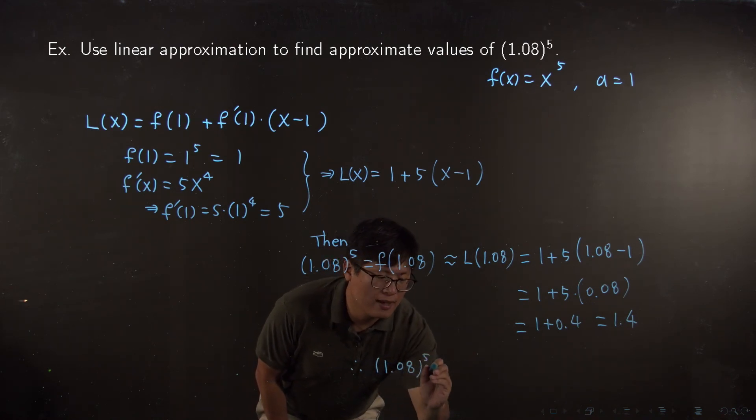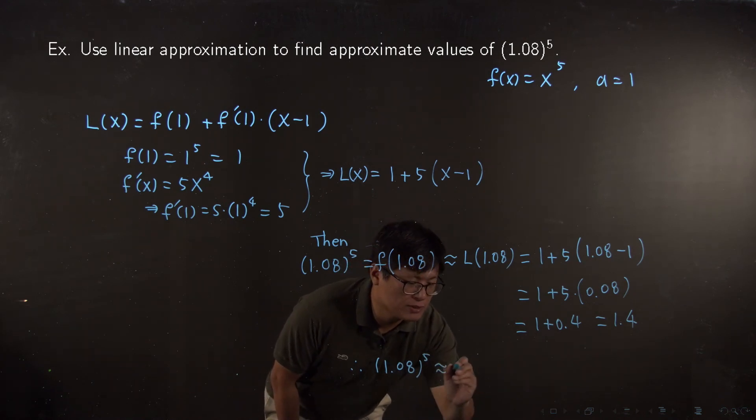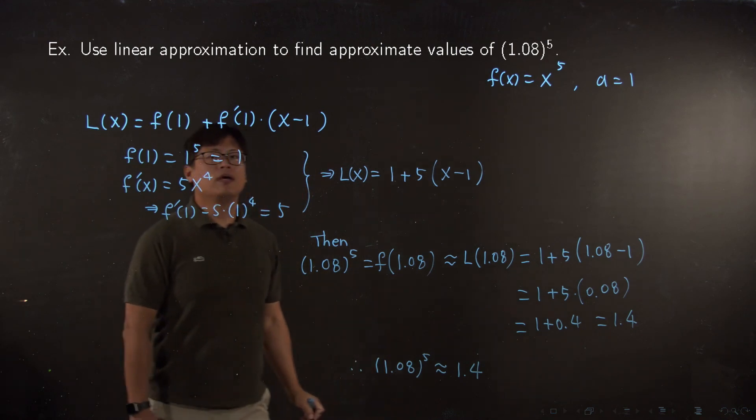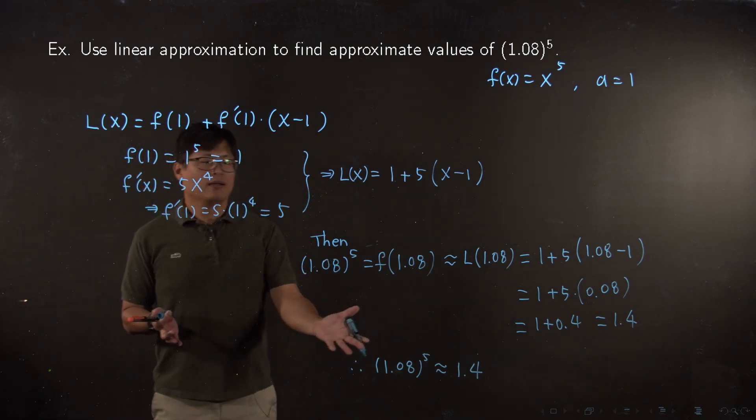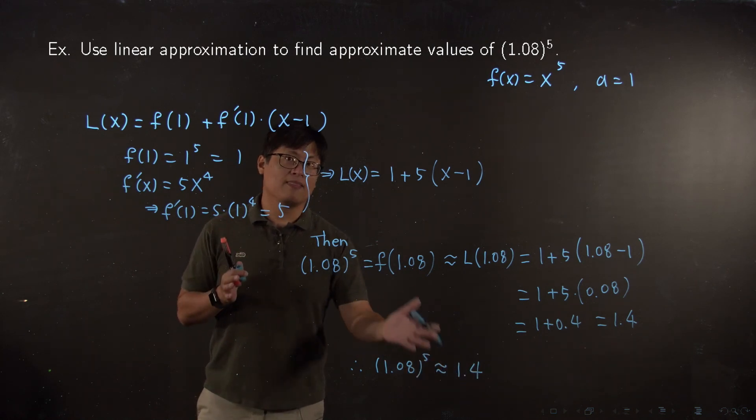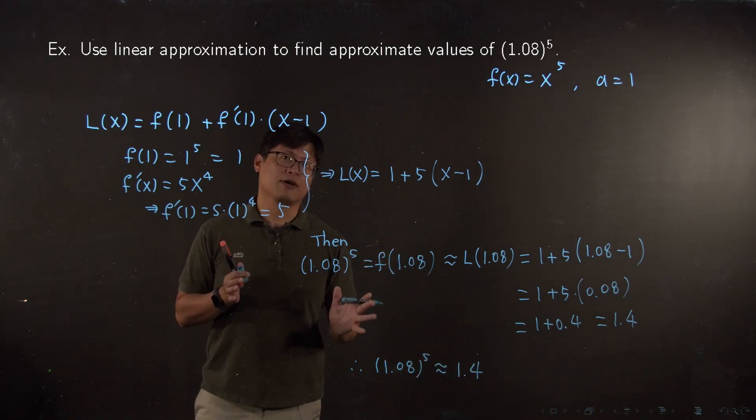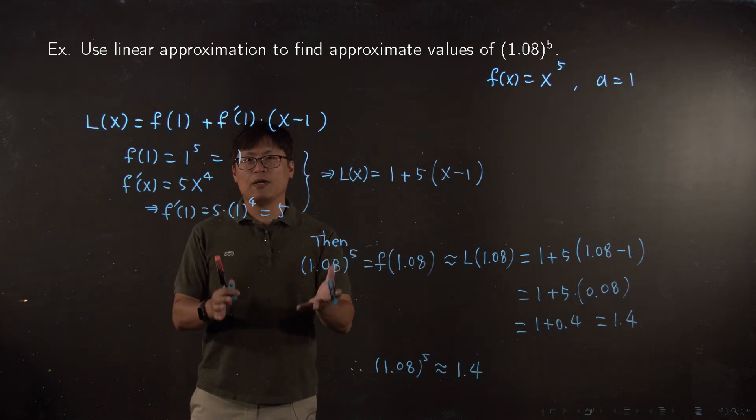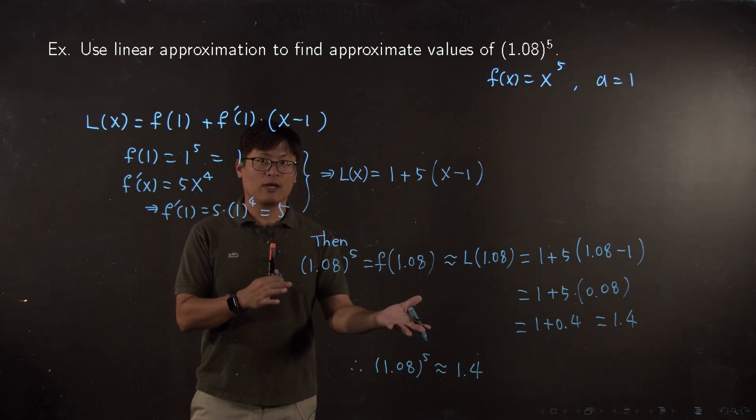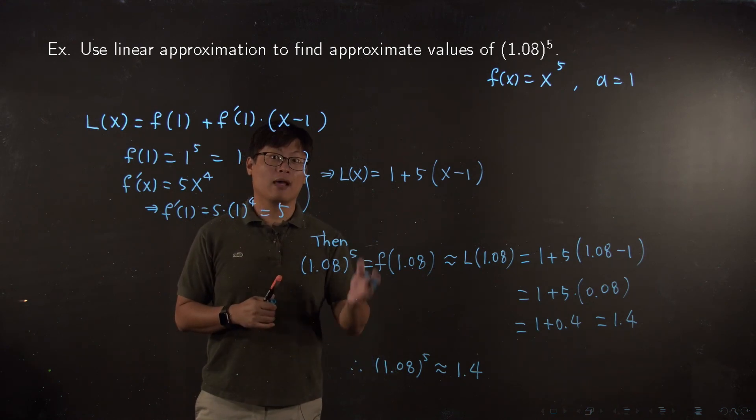So now my answer is, my approximation is 1.08 to the fifth can be approximated by 1.4. If you double-check with a calculator, it will be a different value, but this is just an approximation. If you want to get a better approximation, you should do the quadratic approximation or Taylor series. We're going to talk about that in calculus.